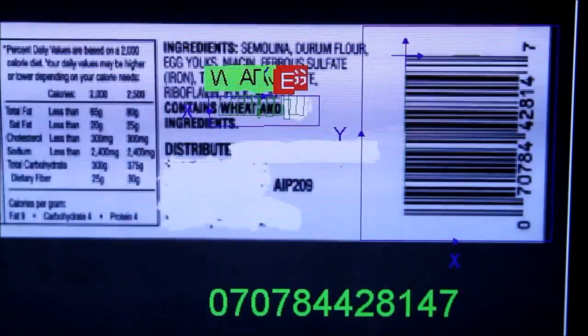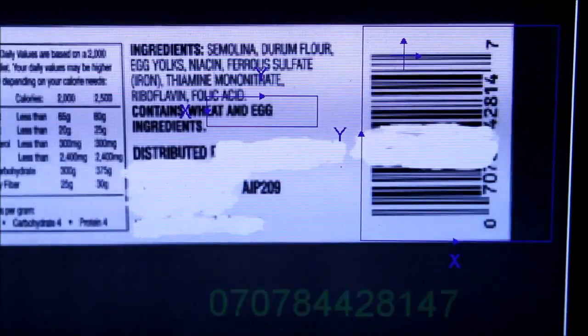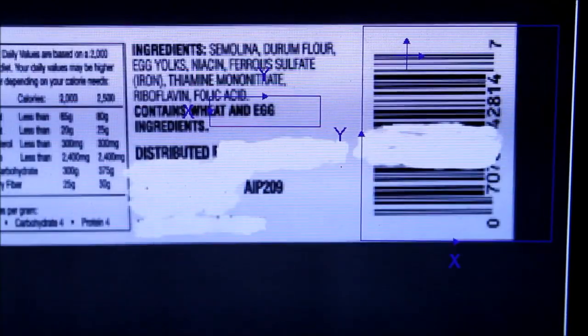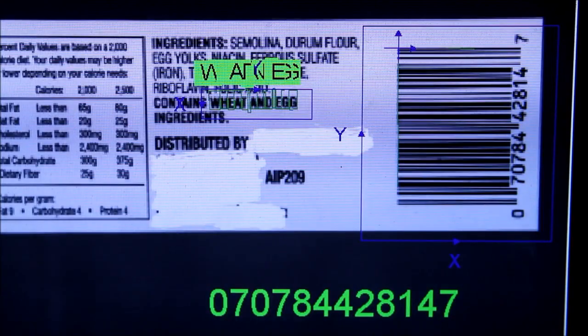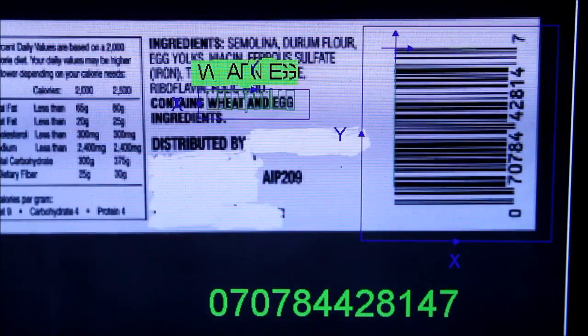The line scan camera is able to handle a larger field of view with higher resolution with a much smaller mechanical profile and is frequently used in web inspection applications for these reasons.